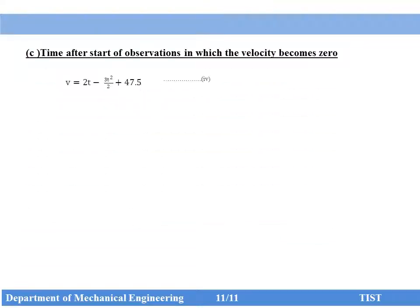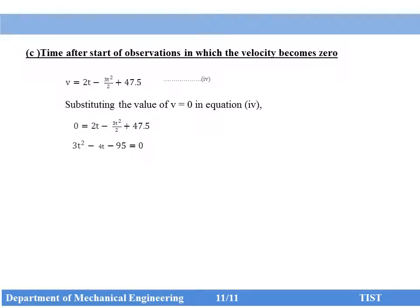For Part C, time after the start of observation at which velocity becomes 0: set v = 0 in Equation 4 — that is 0 = 2t − 3t²/2 + 47.5. This is a quadratic equation. Solving using the quadratic formula, you will get two values of t; take only the positive value. The answer is t = 6.3 seconds. That's all about Section 1.1, Kinematics of Rectilinear Translation.